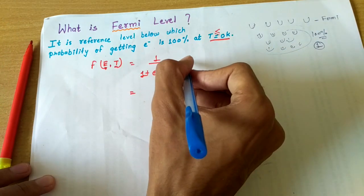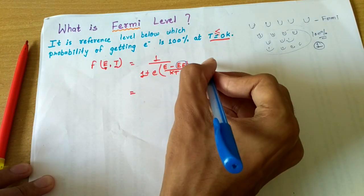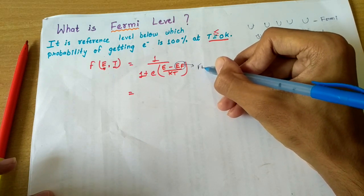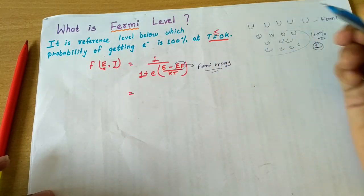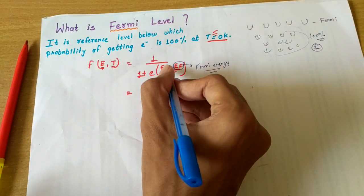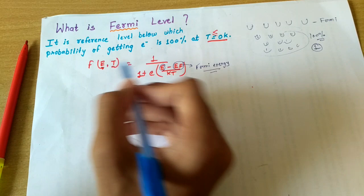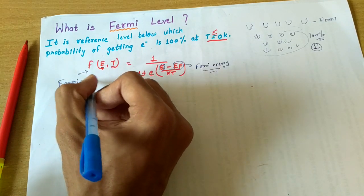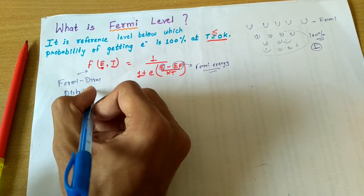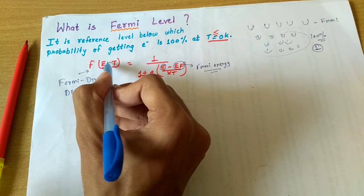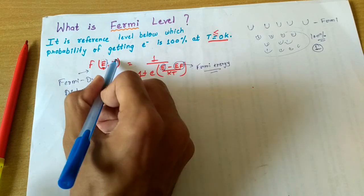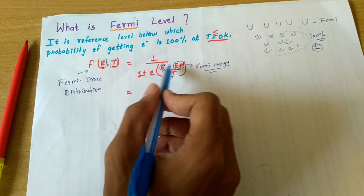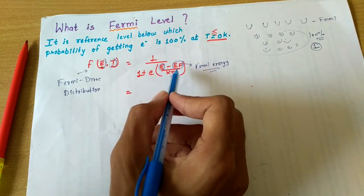Here Ef is the Fermi level of the particular semiconductor, and its value may change depending on the type of semiconductor. Ef is the Fermi energy — the energy of electrons at the Fermi level. E is the energy state of the electron for which we calculate the probability. This Fermi-Dirac distribution function gives the probability of electrons possessing a particular energy E at a particular temperature T in Kelvin. Both (E minus Ef) and kT are units of energy, so the units are satisfied.